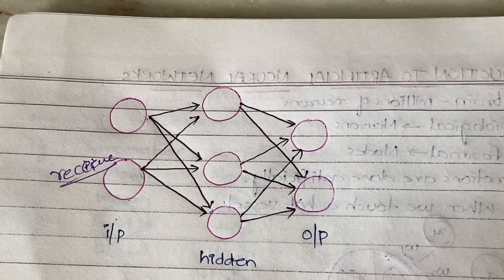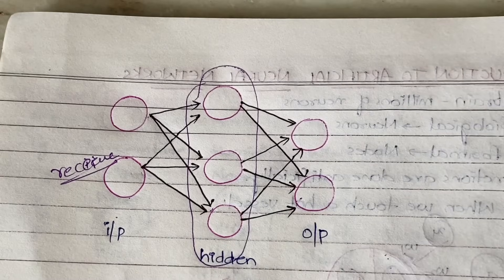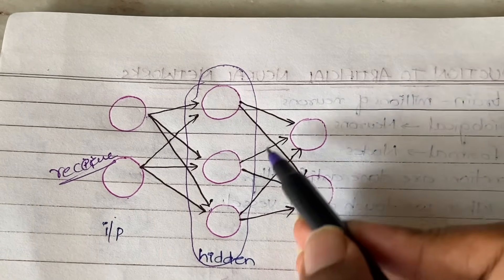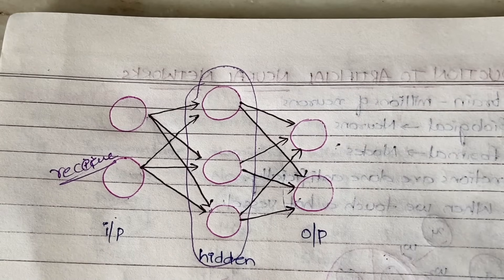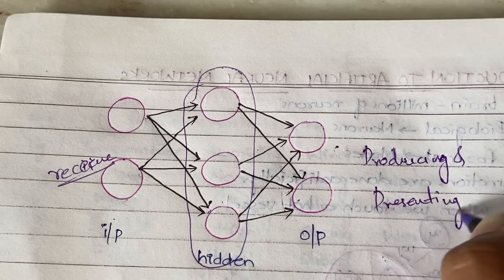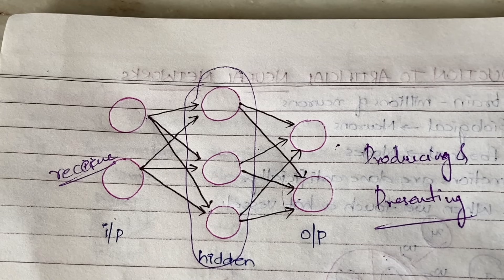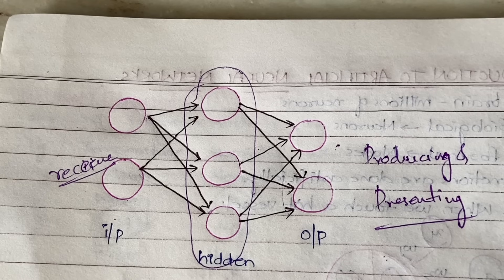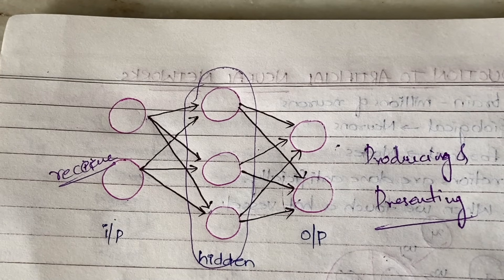The hidden layer has neurons responsible for extracting relevant information from the input. The important data is taken from the input, processed, and an output is generated — all of this happens in the hidden layer. The hidden layer is the most important layer where all data processing and output generation takes place. The generated output is then sent to the output layer, which is responsible for producing and presenting that output to the user.